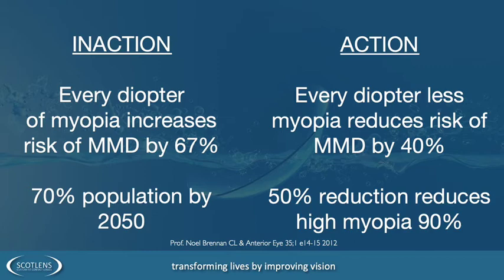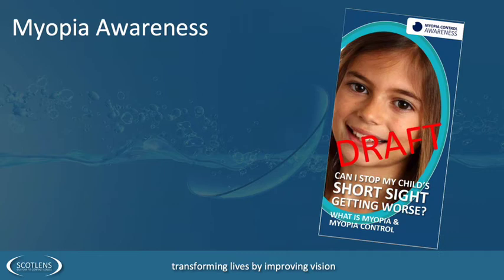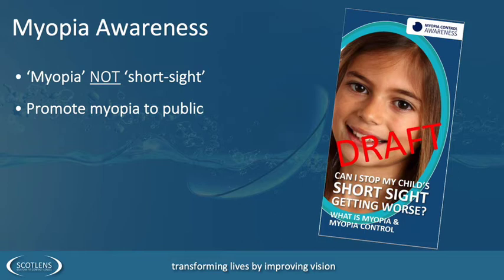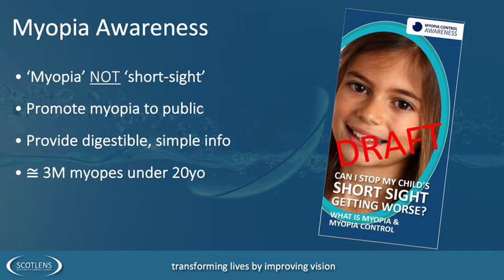If we can slow myopia by 50%, we can reduce the amount of high myopia by 90%. So 50% reduction is a real goal and benchmark. The first step is improving public awareness — use the term 'myopia' rather than 'short sight,' promote it to the public with simple digestible information. At the moment, there are around three million myopes under the age of 20 in the UK who could all benefit from knowing about the condition.